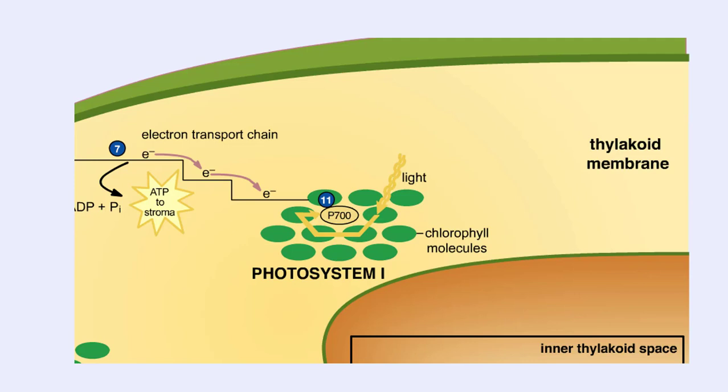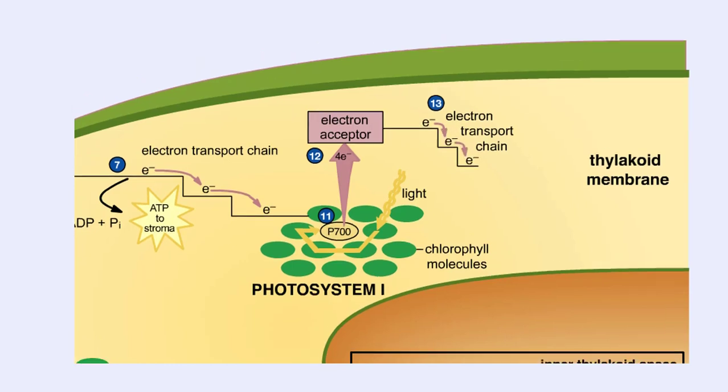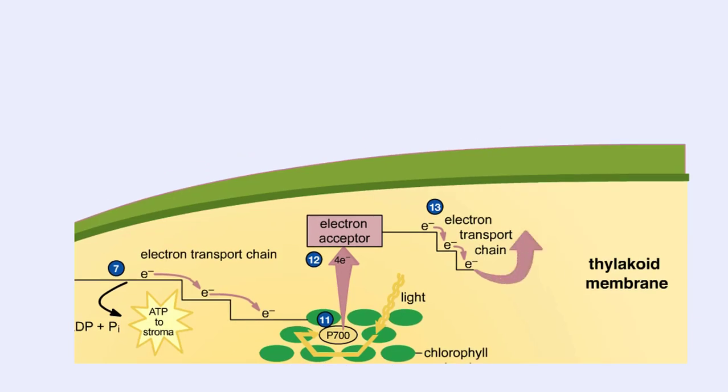The excited electrons from photosystem I are passed to another electron acceptor molecule, where they are passed along a different electron transport chain. The electrons complete their transit through the electron transport chain and reduce NADP plus to NADPH.